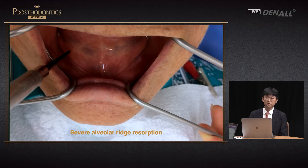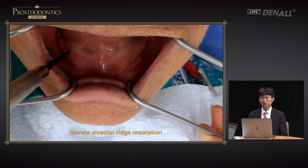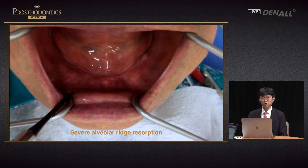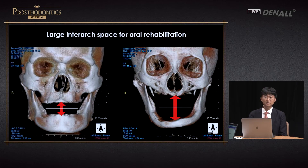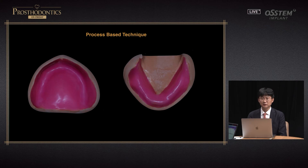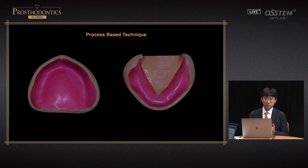When impressions are taken and the recording base is fabricated, there can be some errors. The base should be stable in the mouth; if not, it will introduce errors in the bite obtained. For patients with severely resorbed alveolar ridges, the large inter-arch space poses additional problems. Some dentists use a technique where the base is made with wax, cured first, and then the wax rim is mounted over it to stabilize the recording base. However, this has a problem of double curing.